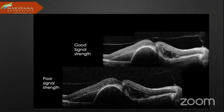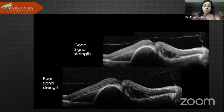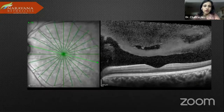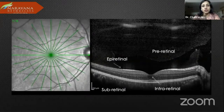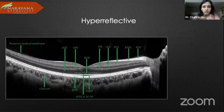This is a good signal strength seen above compared to the one below — the reasons could be various, including media opacities, and we need to be aware of that. The direction of the scan is also extremely important. Going on to looking at pathology, we look at it at the pre-retinal, epiretinal, intra-retinal, and subretinal levels.